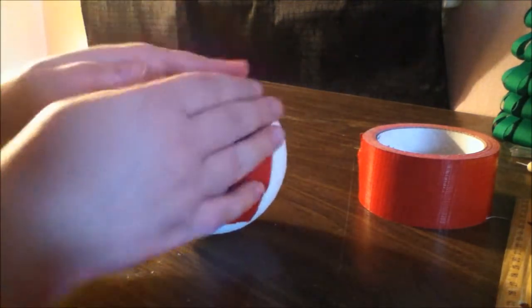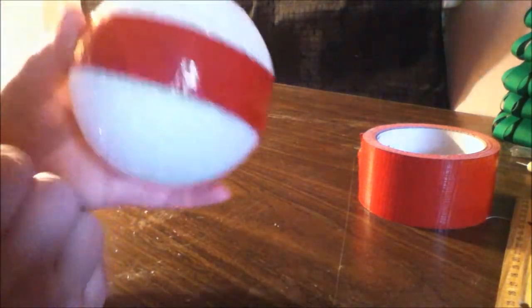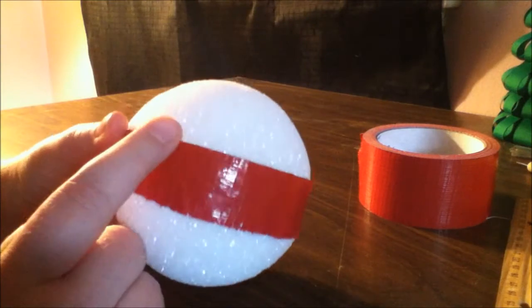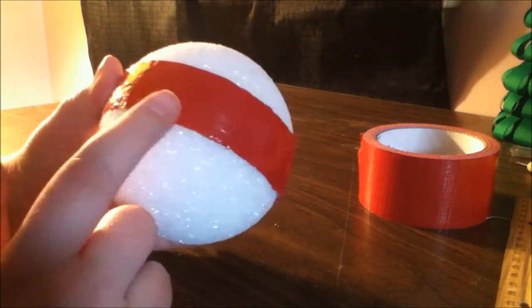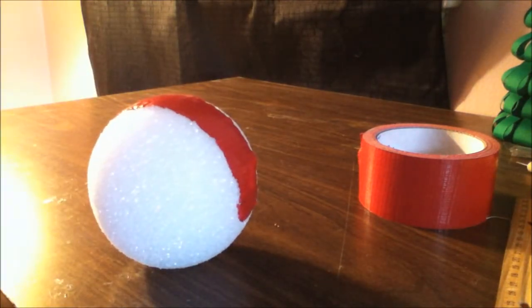The reason why we rip or cut the duct tape in half is because it lies flush on the ball and you don't have a lot of wrinkles. So just do that until the whole ball is covered.